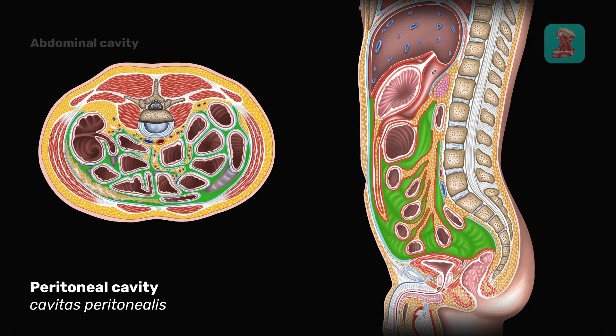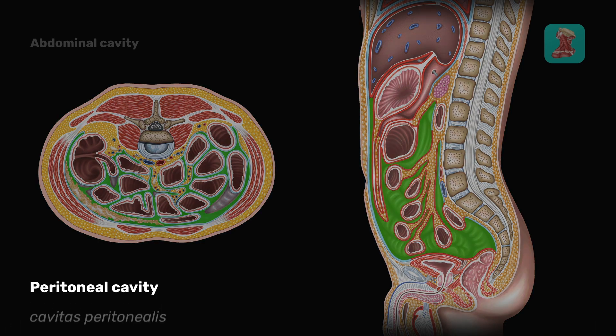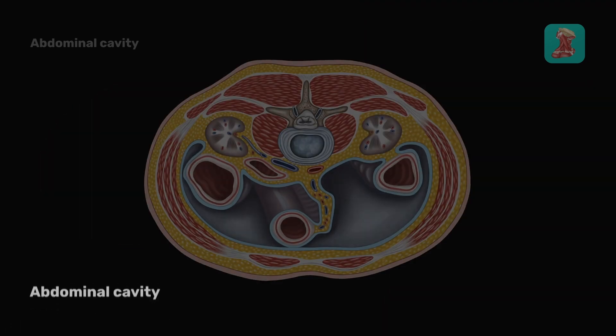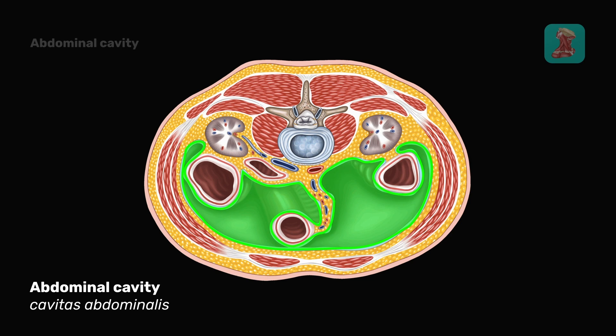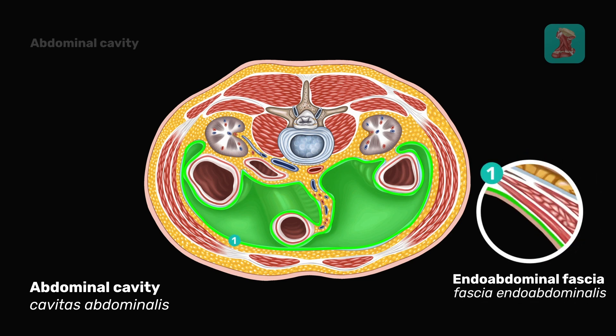The space between the sheaths is called the peritoneal cavity. This cavity is filled with serous fluid. The peritoneum forms various spaces inside the abdominal cavity, separating the organs from each other. The abdominal cavity is a space that is delimited by the endo-abdominal fascia.